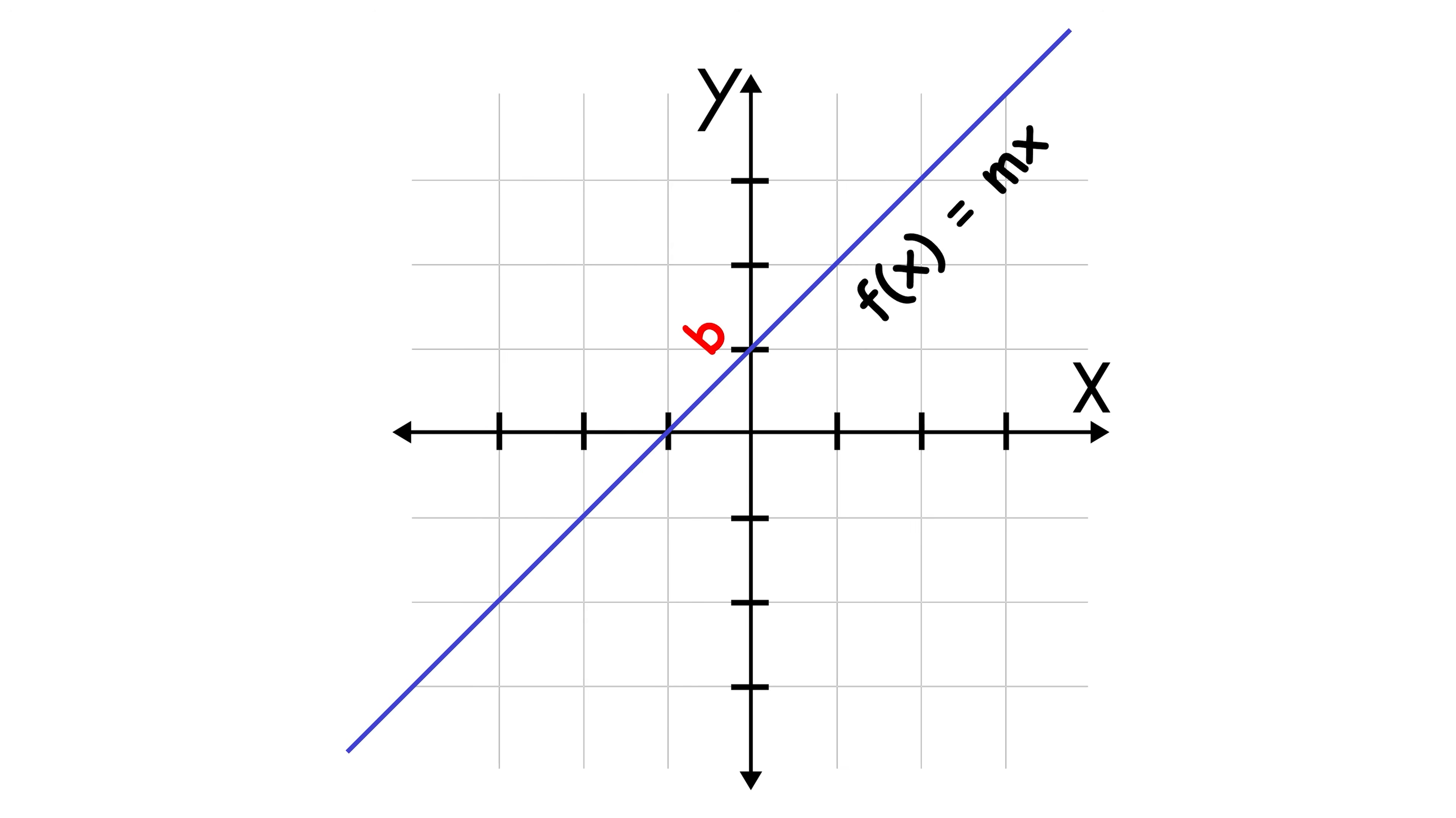If b is zero, the line passes through the origin. These functions are the foundation for understanding the general behavior of more complex functions.